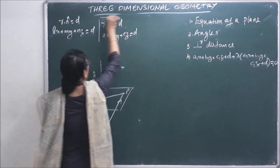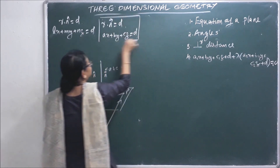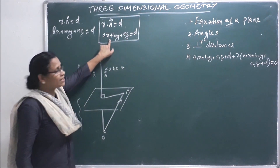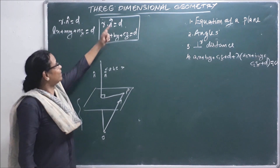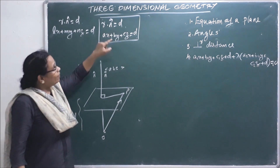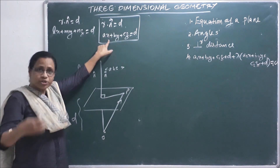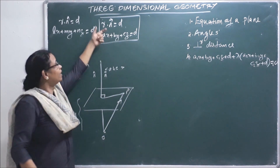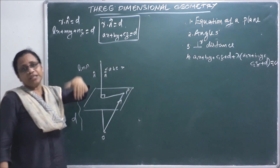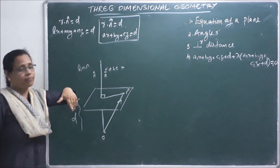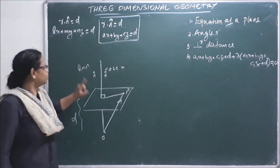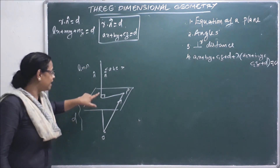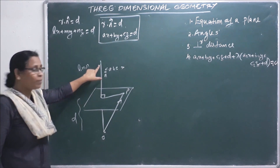Now we have the right point here. This is the Cartesian equation and this is the vector equation of the plane. This is the normal vector.